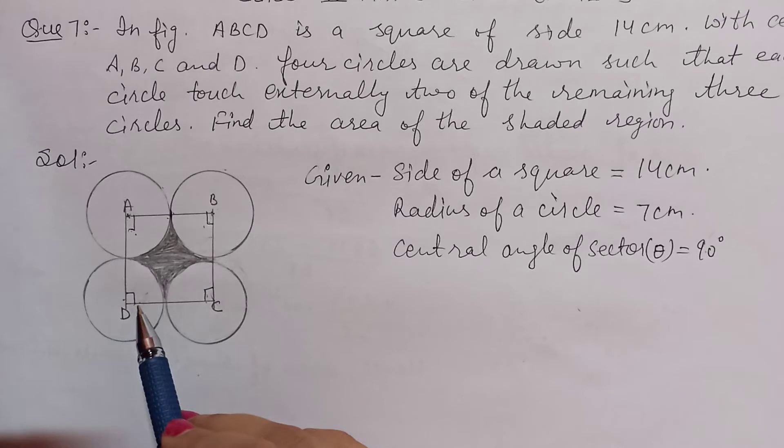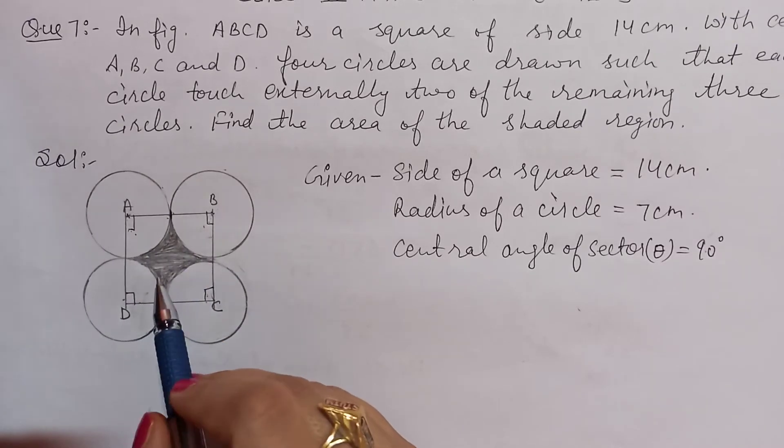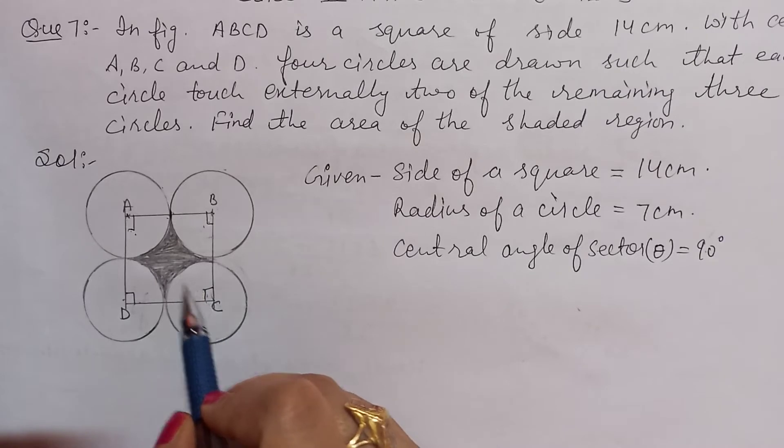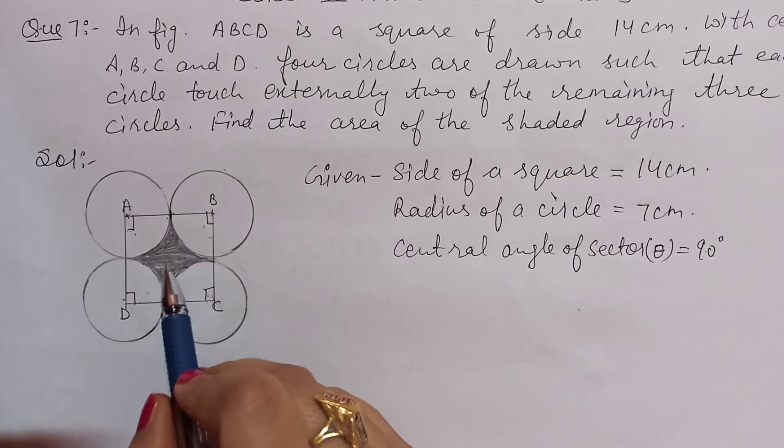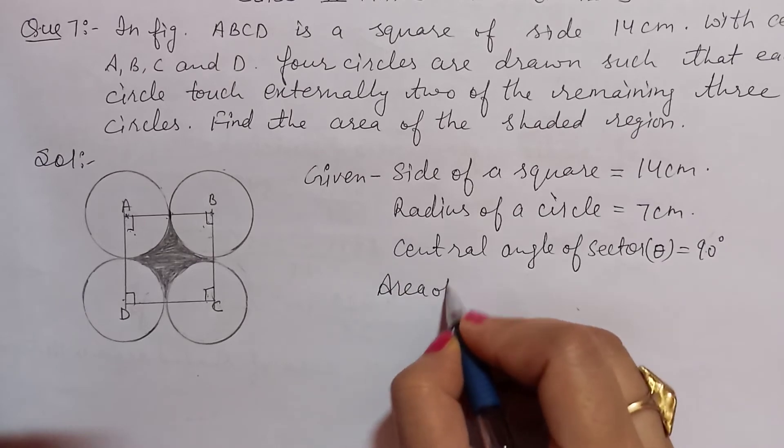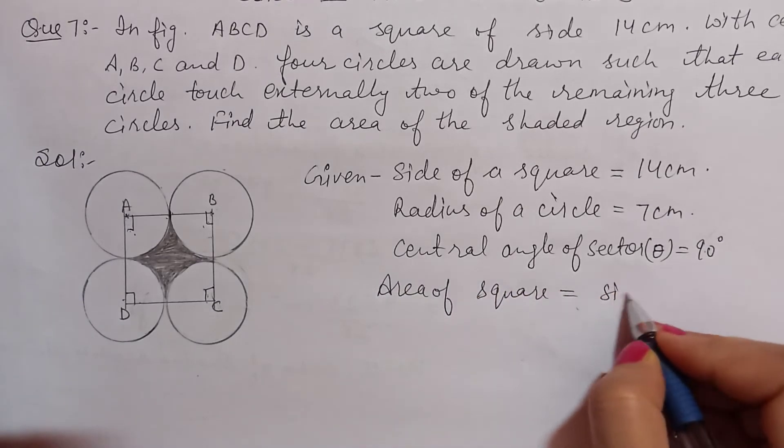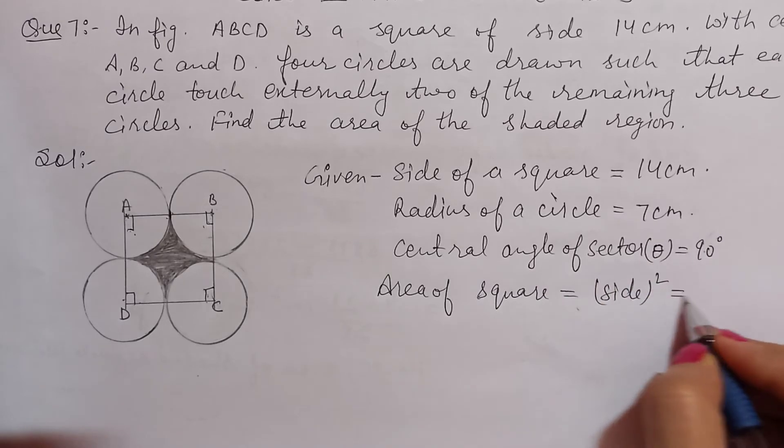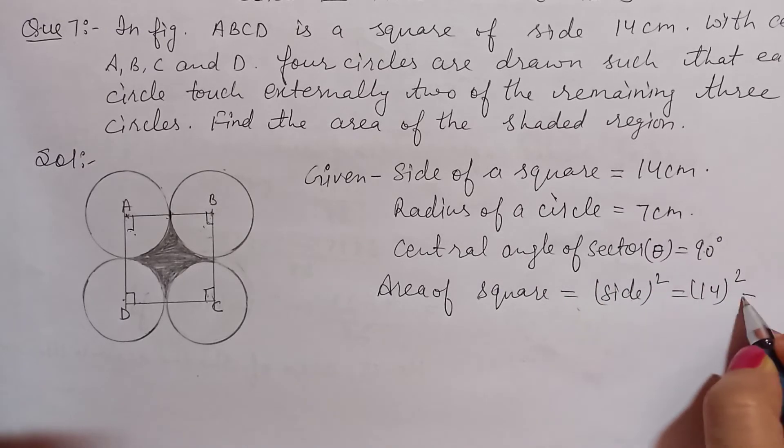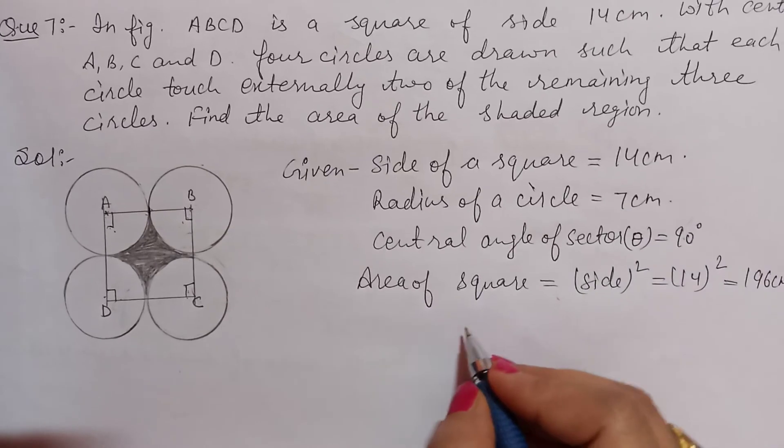You will remove 4 quadrant area from the square area and minus it. So you will have shaded region area. Area of square will be side squared. That is 14 squared, which is 196 cm squared.